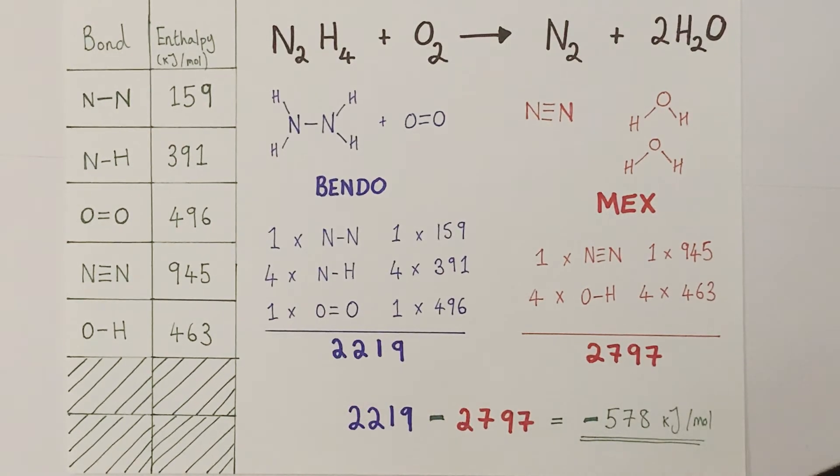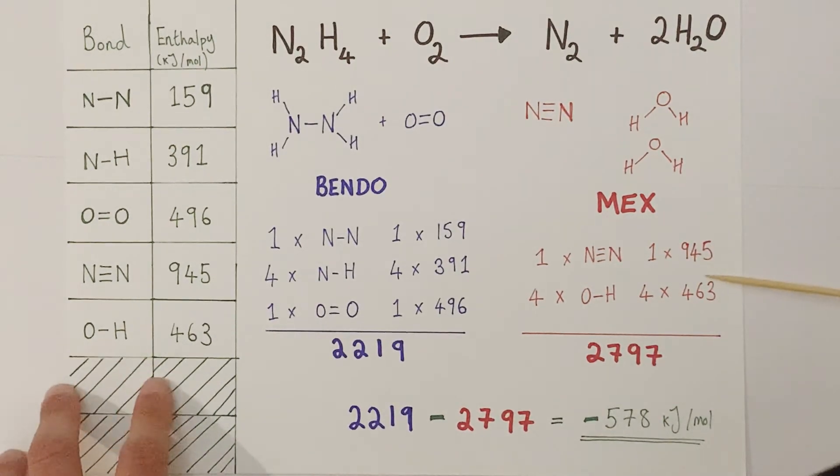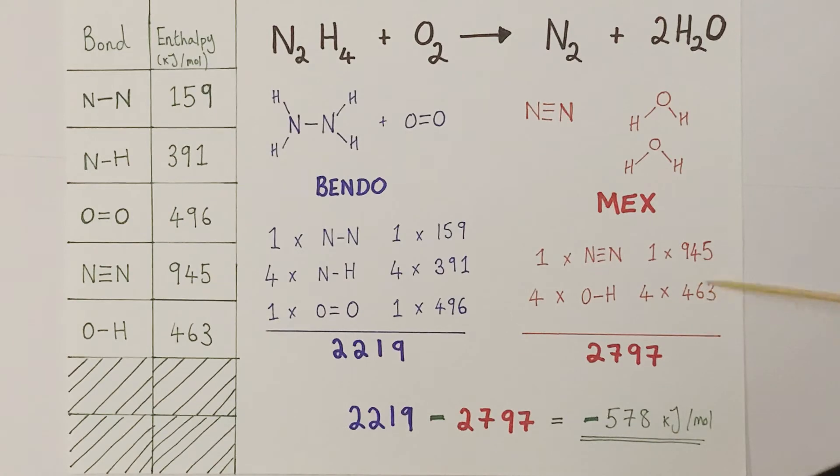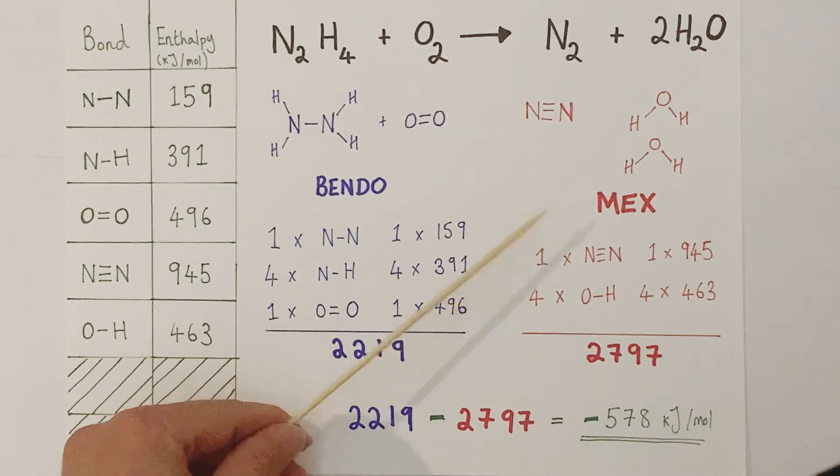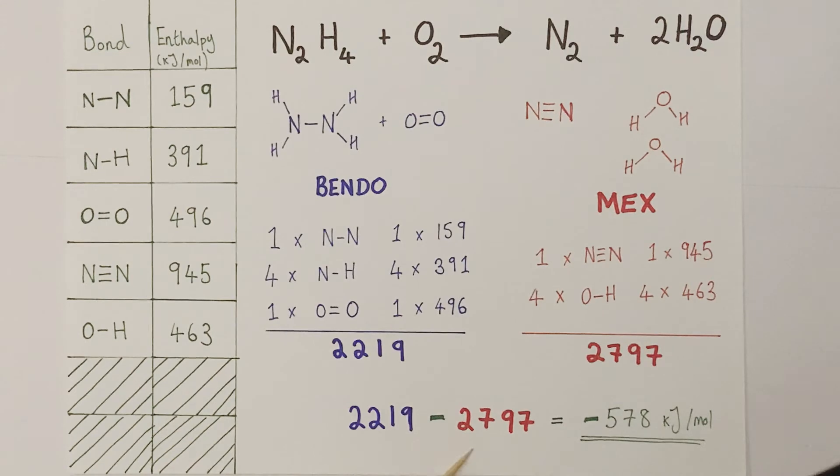Do the same for the products. So I count up, there's one nitrogen nitrogen triple bond and then four OH single bonds. So again, I write those down as a list. I then find the associated bond energies from the table over here and multiply where necessary if there's more than one of that bond. Create my subtotal for the bond enthalpies of the bonds found in the products, which is 2797. I remember that breaking bonds is endothermic, making bonds is exothermic. So I take away the product value from the reactant value because it's exothermic. And I get my overall enthalpy change for the reaction itself as minus 578 kJ per mole.